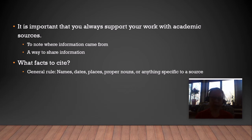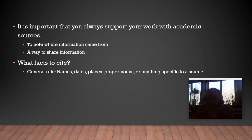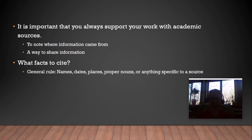So we want to make sure we give proper credit and acknowledge researchers for that. As far as what counts as facts in your writing that need a citation, a general rule of thumb is: names, dates, places, and proper nouns — which are basically names, dates, and places. Or anything specific to a source. If I read one book that says something specific about defense mechanisms and it's the only source with that information, I want to make sure I give that person who wrote that book credit.